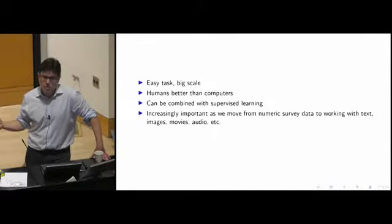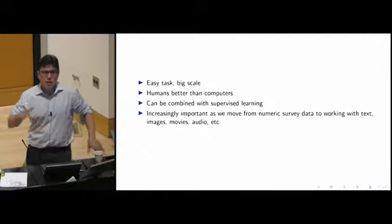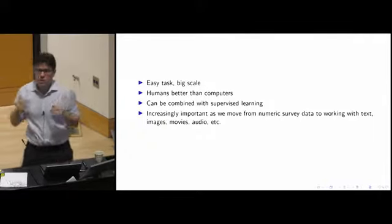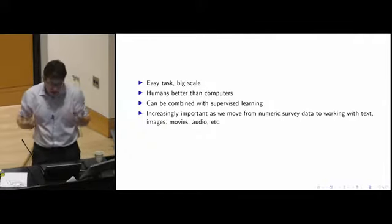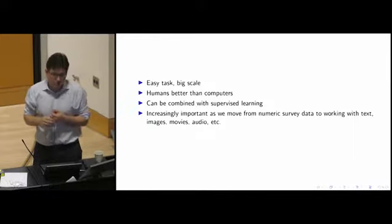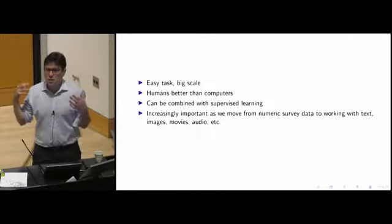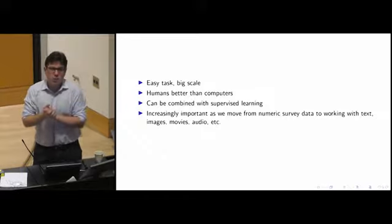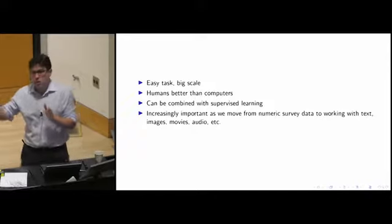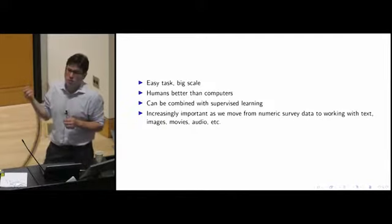I think in the social sciences in particular, this comes up more as we move towards what I would call these newer forms of data. As social scientists, I think we're often used to working with survey data with a rectangular data file where there's one row for each person, one column for each variable. In that kind of setting, having these people come and annotate the data is not particularly helpful. But when you have text, images, movies, and audio, there still seems to be the case that there's stuff that people can do that computers can't do. As we move more and more into novel forms of data, I think this kind of design will become increasingly important.